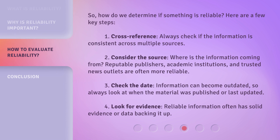So, how do we determine if something is reliable? Here are a few key steps. First, cross-reference: always check if the information is consistent across multiple sources. Second, consider the source: where is the information coming from? Reputable publishers, academic institutions, and trusted news outlets are often more reliable.